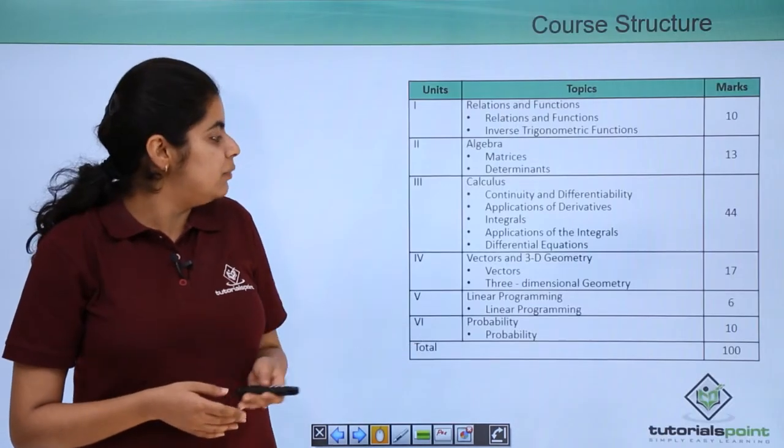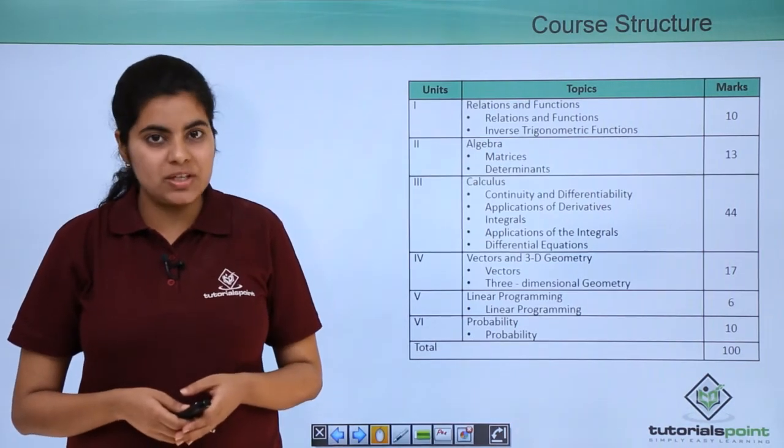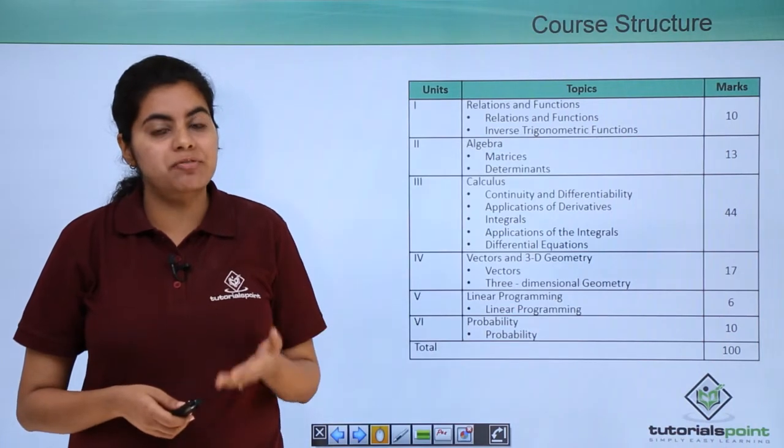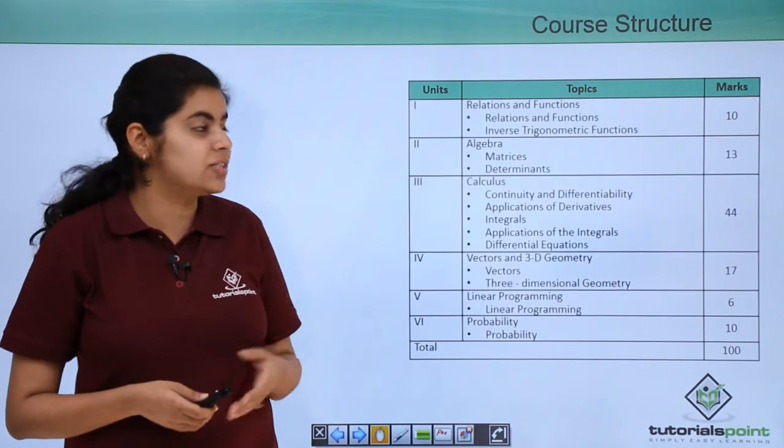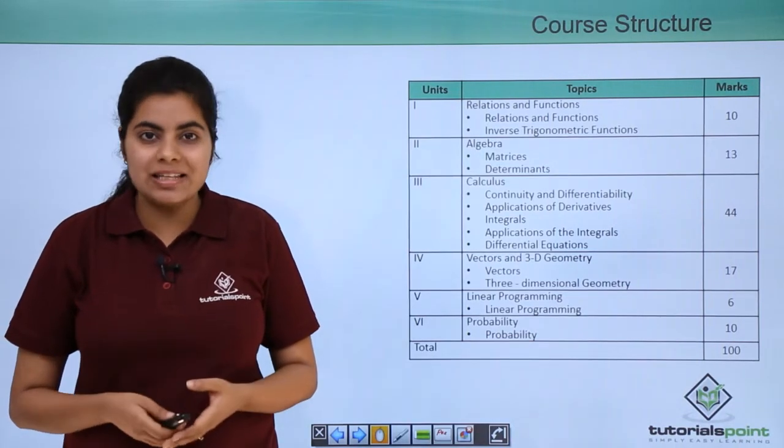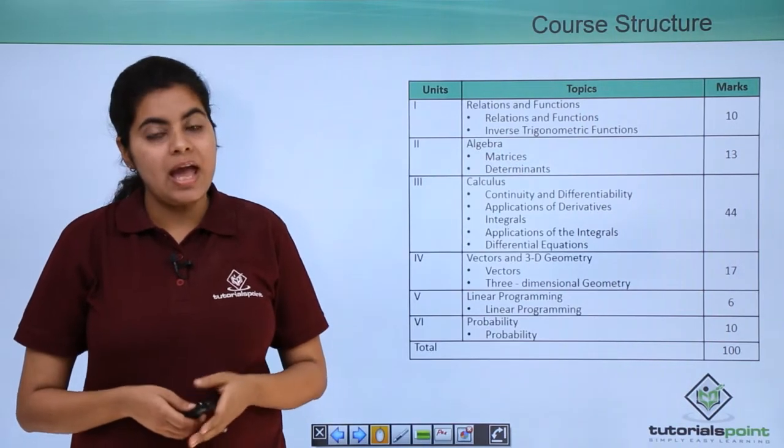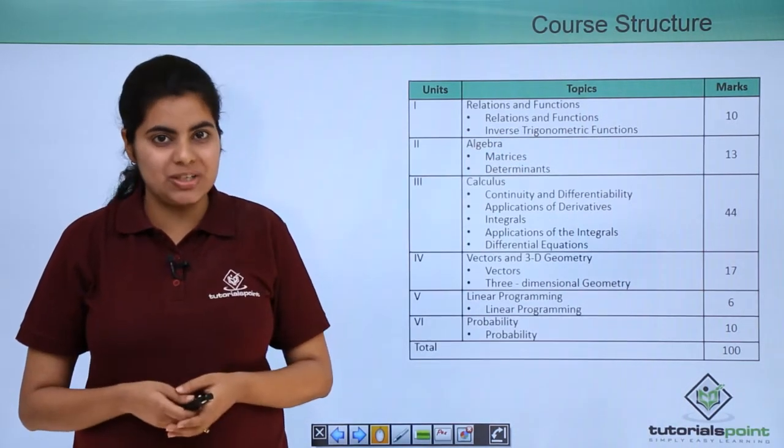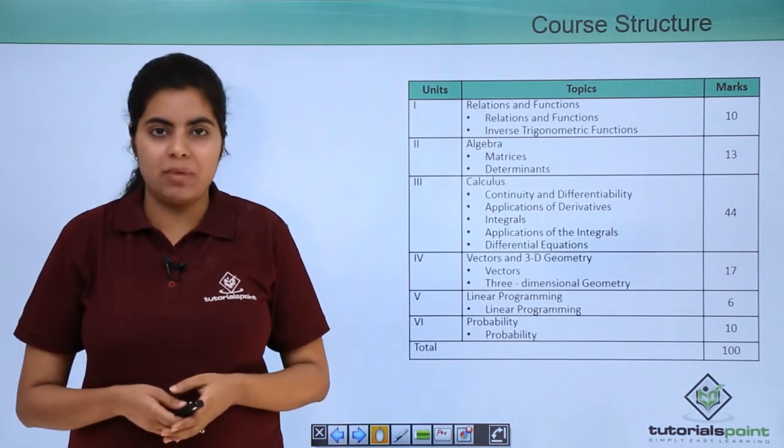We have namely 6 units in our syllabus. The name of the first unit is relations and functions. Relations and functions has 2 chapters under it. The first chapter is relations and functions, and the second chapter is inverse trigonometric functions. Both these chapters are covered under the same first unit. This unit has overall weightage of 10 marks.